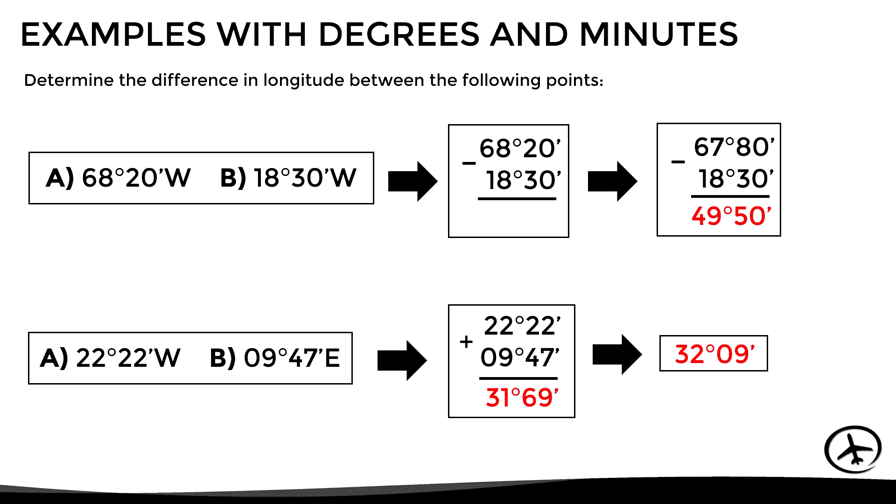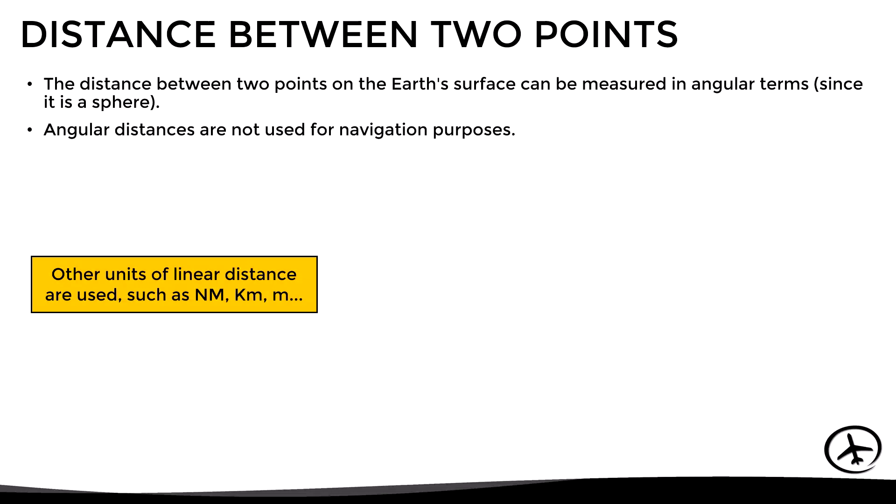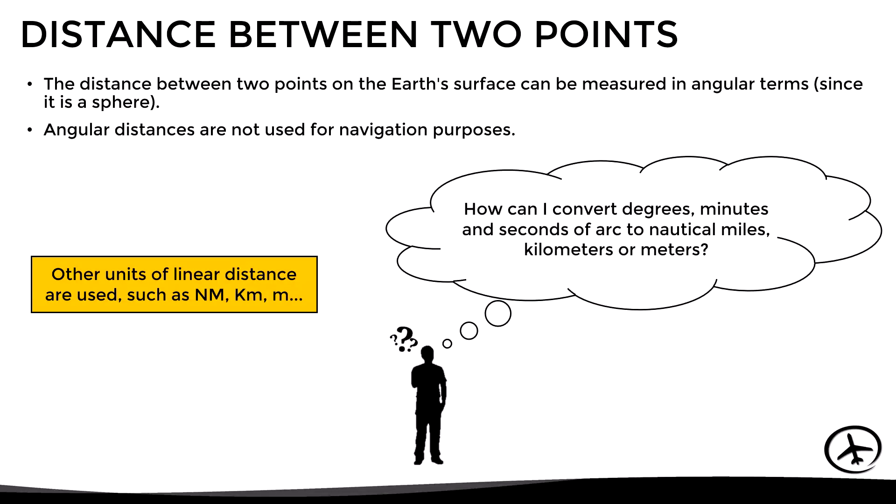Having seen how to obtain the difference in latitude and longitude, let's look at how to convert it into distance. The distance between two points on the Earth's surface can be measured in angular terms since it is a sphere. However, angular distances are not used for navigation purposes, since other units of linear distance are used, such as nautical miles, kilometers, etc. So the question is: how can we convert degrees, minutes, and seconds of arc to nautical miles, kilometers, or meters?